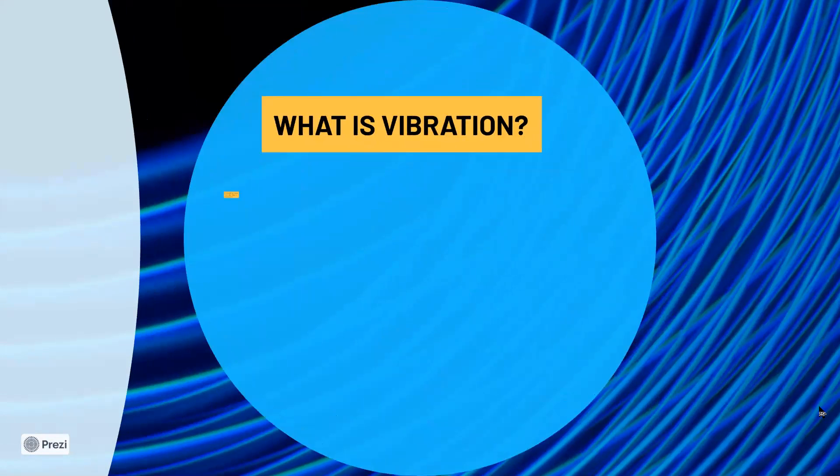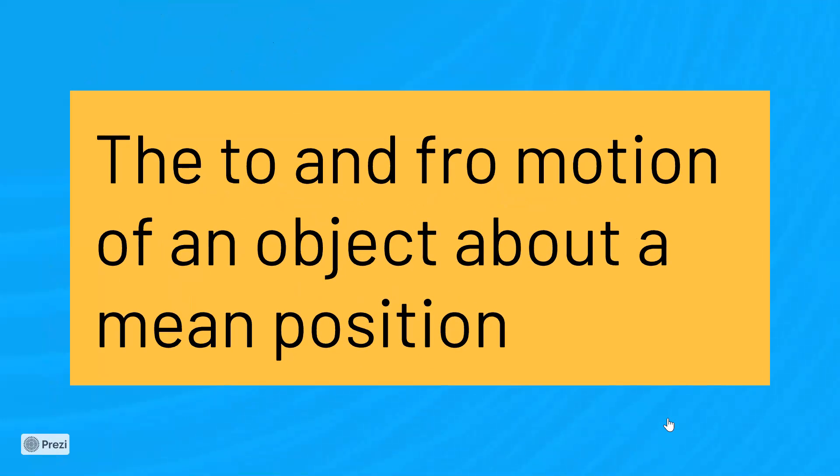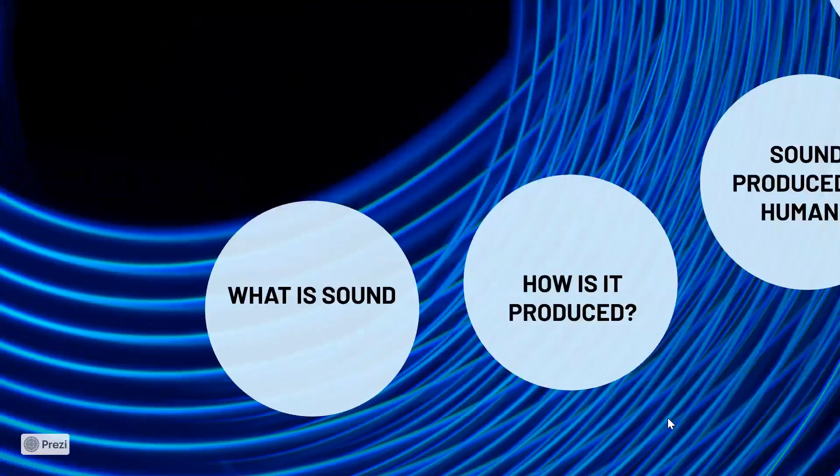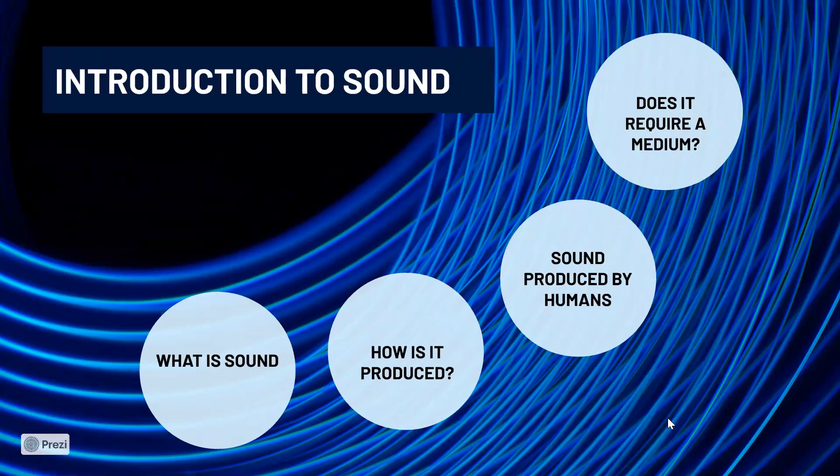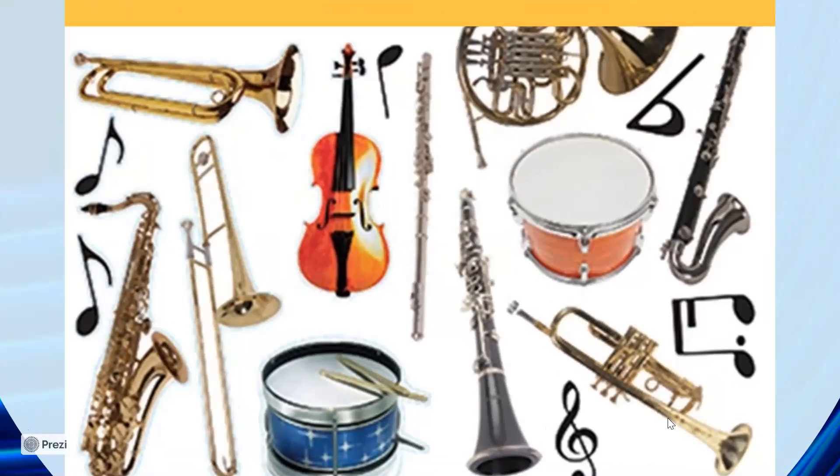So in a guitar sound is produced due to vibrations. So what is the meaning of the term vibration? Vibrations are nothing but the to and fro motion which means the back and forth motion of an object about its mean position. Does only guitar produce sound due to its vibration? What about the other musical instruments? Yes, obviously all the musical instruments are producing sound because of vibration in one way or the other.